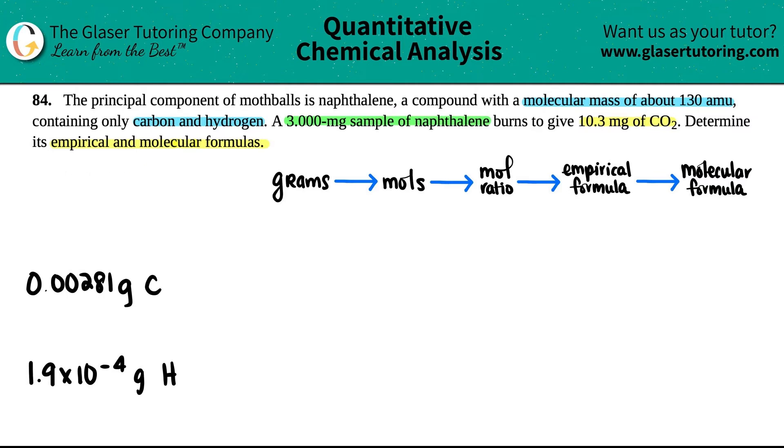So let's write them out. I have 0.00281 grams of carbon and I have 1.9 times 10 to the negative fourth grams of hydrogen. And now I can kind of erase this as well. So first thing is I have to get the moles. How do I go from grams to moles? We just did that. That's the periodic table. Make that ratio. So I'm going to multiply by a ratio and I, for empirical formulas and molecular formulas, I like to do them at the same time. So grams of carbon go on the bottom, mole of carbon go on the top. And the same thing with the hydrogen. Grams of hydrogen on the bottom and mole of hydrogen on the top.